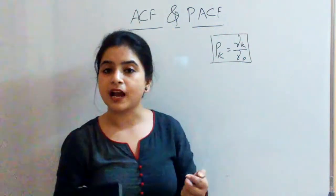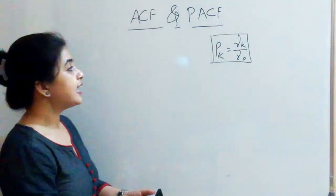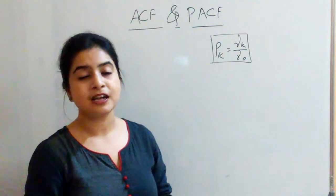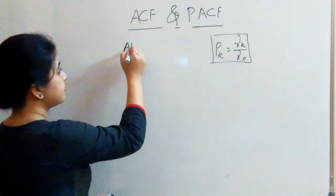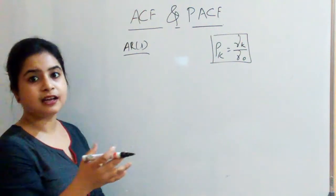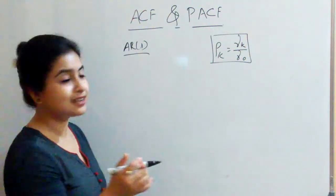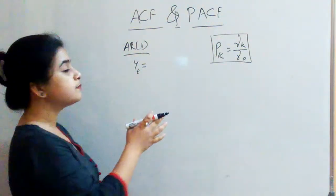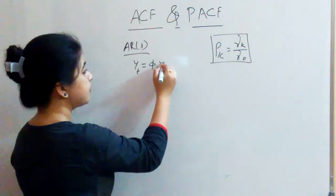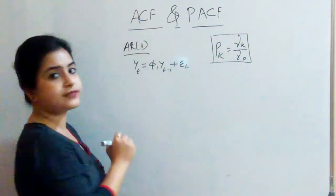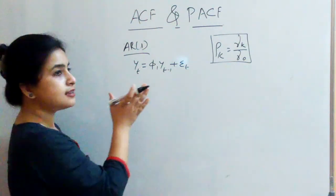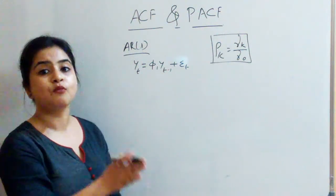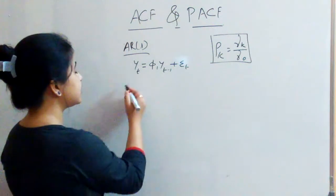Let's start with the AR series and see what type of graph we obtain for the ACF function and what inferences we can draw. Let us take AR(1), that is lag length 1. The general form is yt = phi-1 yt-minus-1 plus epsilon-t. Now if we multiply on both sides by yt-minus-k, let's see what we can get: yt times yt-minus-k equals phi-1 yt-minus-1 yt-minus-k plus epsilon-t times yt-minus-k.